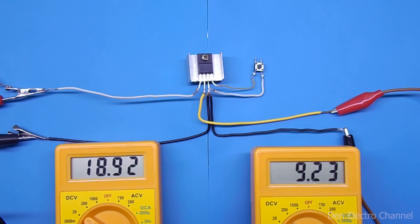Now let's do some tests on this chip and see how it works. The left multimeter will show the input voltage, now it is almost 19 volts. And the right multimeter shows the output voltage.